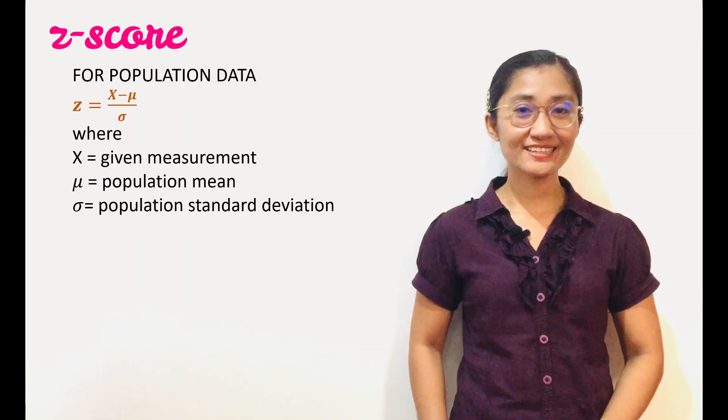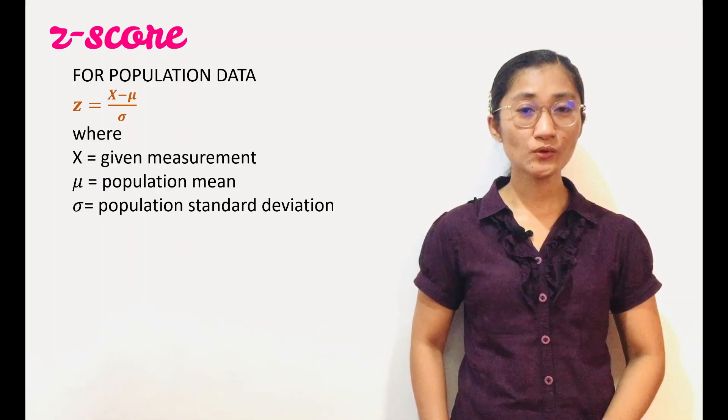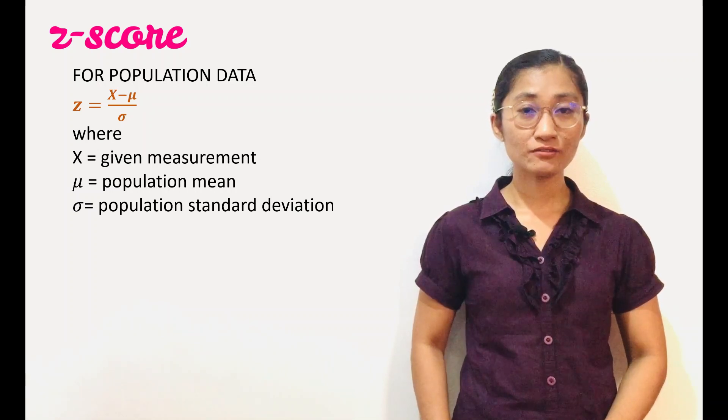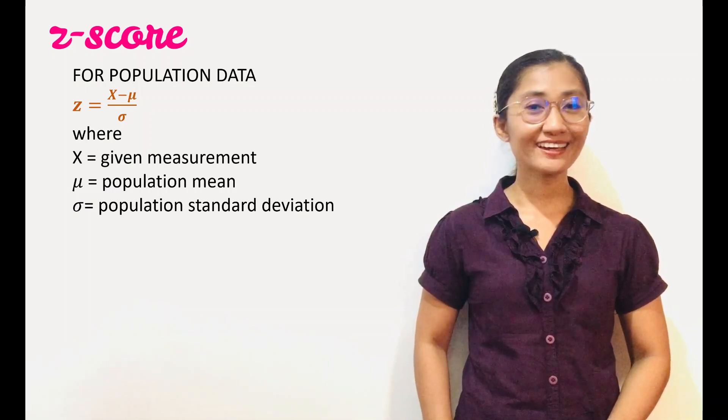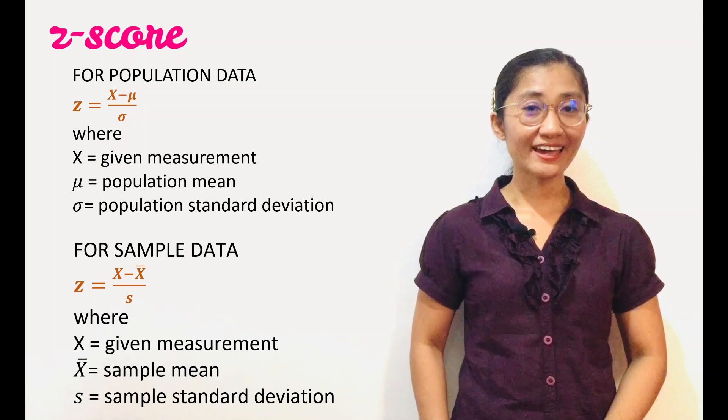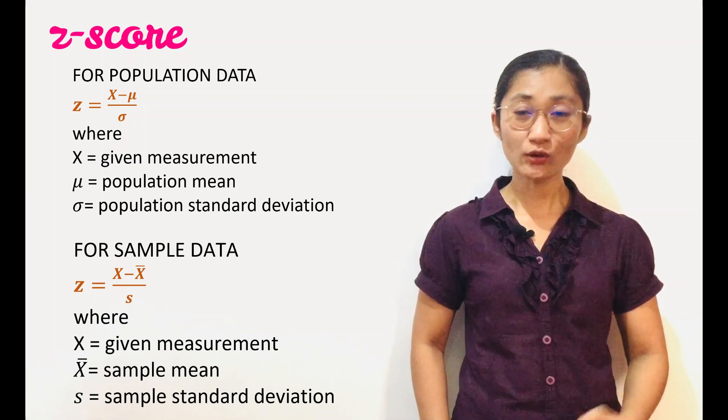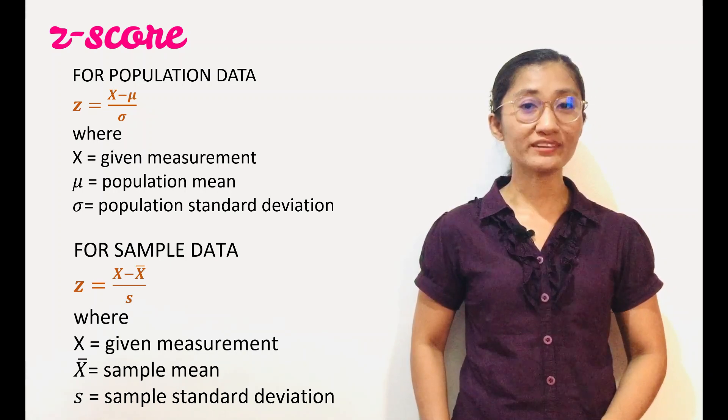The formula for solving Z-score is Z equals x minus mu over sigma for population data and Z equals x minus x-bar over s for sample data.